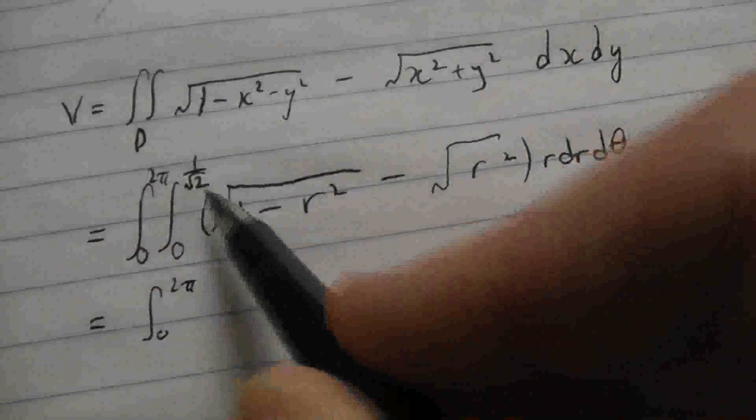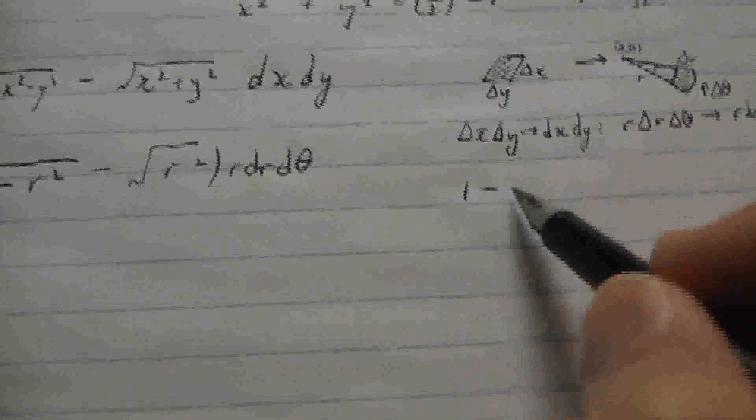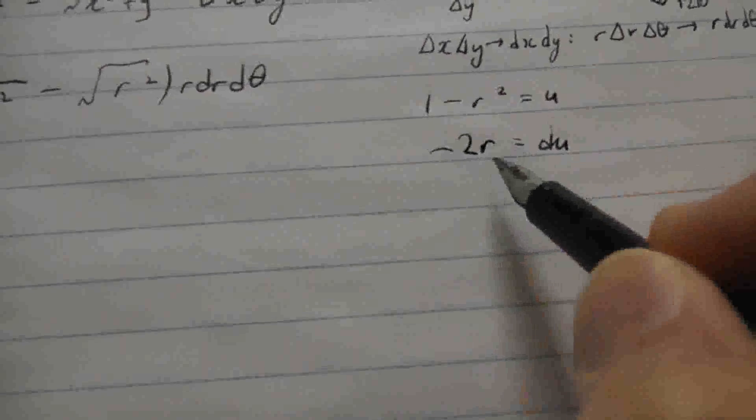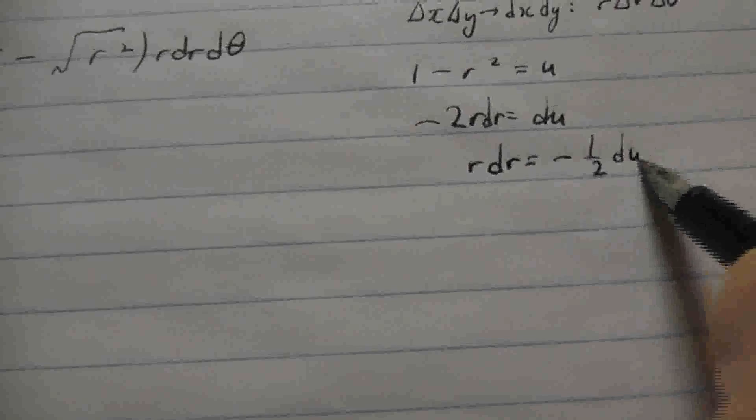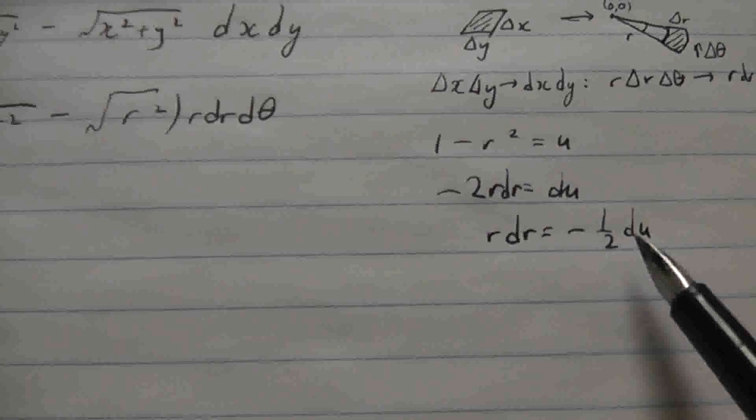0 to 2 pi. If we integrate this first one, it's 1 minus r squared times r. We'll make a substitution. We'll set 1 minus r squared equal to u. So du will be minus 2 r dr. So we only have an r dr, we don't have a minus 2 dr. What we're going to do here is solve. So r dr, which is what we have in our integrand, is equal to minus 1 half du.